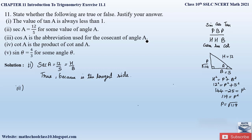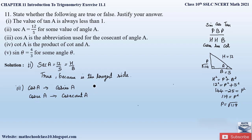The third part says: 'cos A is the abbreviation used for cosecant of angle A.' This is false. cos A is the abbreviation for cosine A, while cosec A is the abbreviation for cosecant A. So the third statement is false.